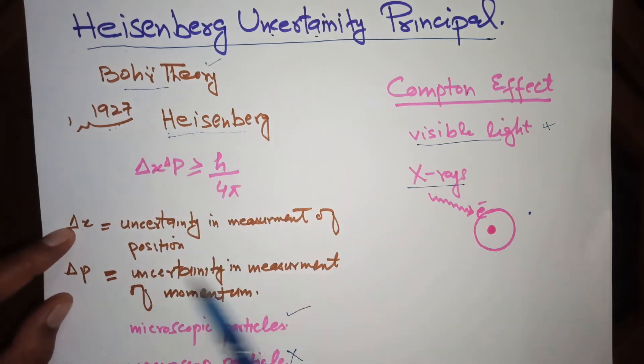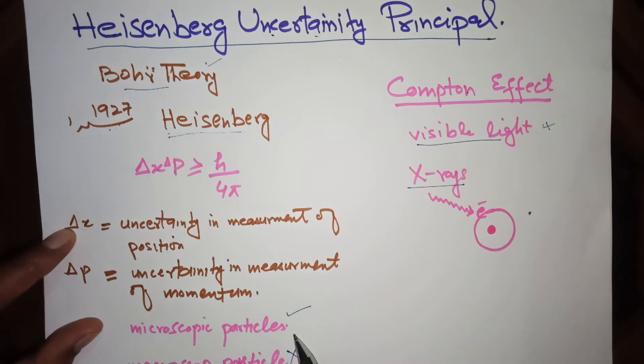Heisenberg Uncertainty Principle is applicable only to microscopic particles like electron, proton and neutron, but this principle is not applicable to macroscopic particles.